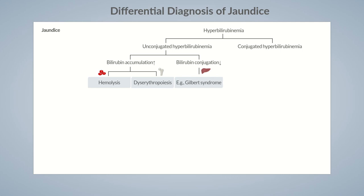Now, let's move on to conjugated hyperbilirubinemia. As its name suggests, conjugated hyperbilirubinemia is associated with elevated direct serum bilirubin levels. However, some conditions also show a concurrent increase in indirect bilirubin. Therefore, conjugated hyperbilirubinemia comprises all disorders with elevated direct serum bilirubin, regardless of indirect bilirubin levels. A useful clinical differentiation is that in conjugated hyperbilirubinemia, the urine dipstick test yields a positive bilirubin result, whereas in unconjugated hyperbilirubinemia, the urine dipstick test is negative.